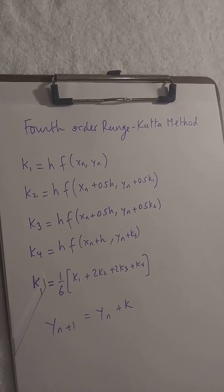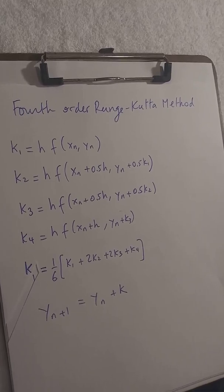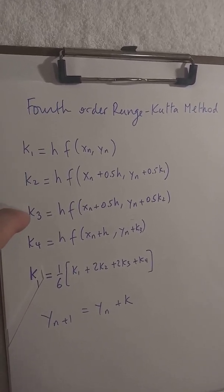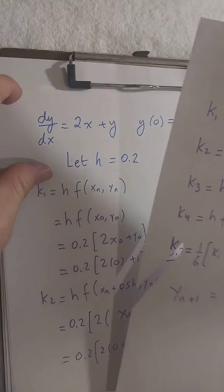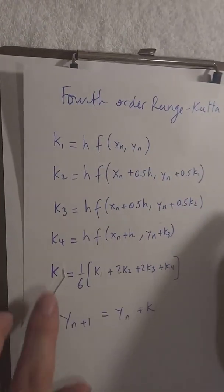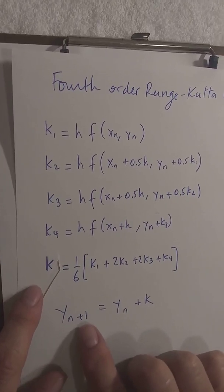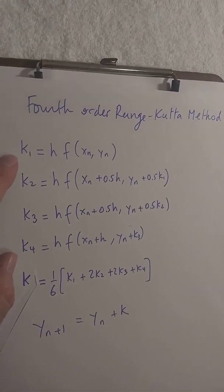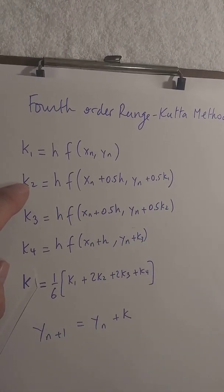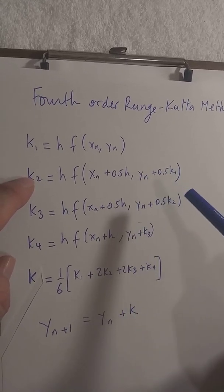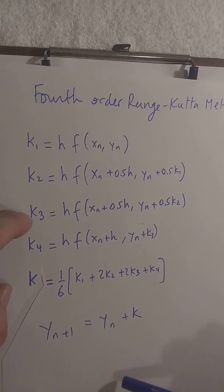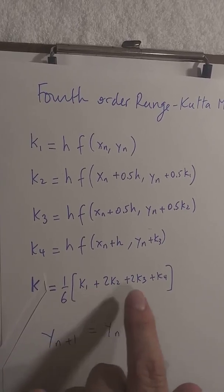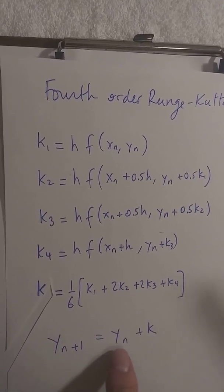The next method is called the Runge-Kutta method — the fourth-order Runge-Kutta method. This method involves more calculations. First we calculate k1, k2, k3, k4, and then calculate a weighted average of all of those, which we call k. Then yn+1 is yn plus k. To calculate k2 we need k1 first. The x for k2 is the previous x plus half the step size, and y is the previous y plus half of k1. Then use k2 to get k3, and k3 to get k4. Once you have k1, k2, k3, k4, k equals one-sixth of (k1 plus 2k2 plus 2k3 plus k4), and yn+1 equals yn plus k.